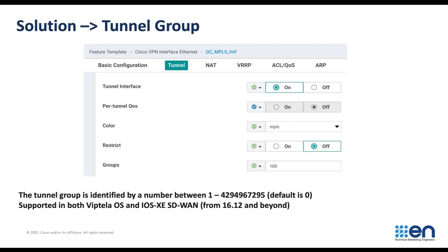So the solution for this is Tunnel Groups. Tunnel Groups can be configured on the same tab under the feature template of Cisco VPN interface Ethernet. It is a tag — it can scale from 1 to 4.294 billion. The default is 0, and it's supported by Viptela OS and Cisco IOS XE from 16.12 and beyond.